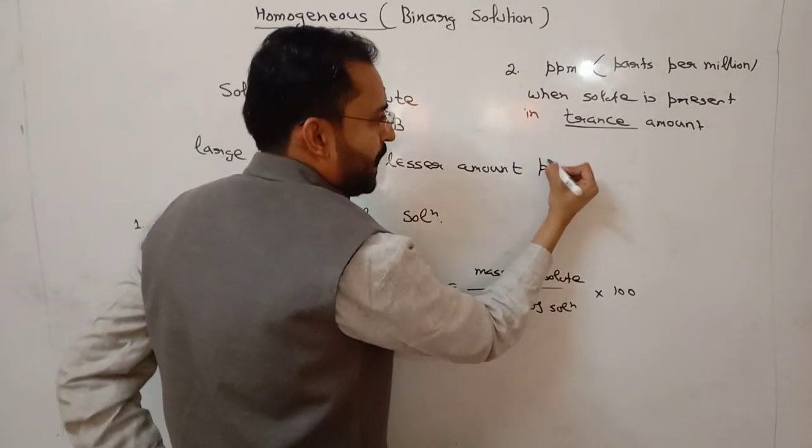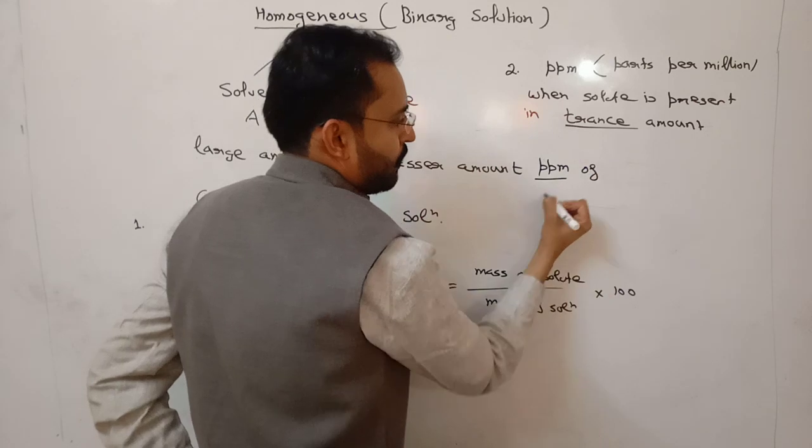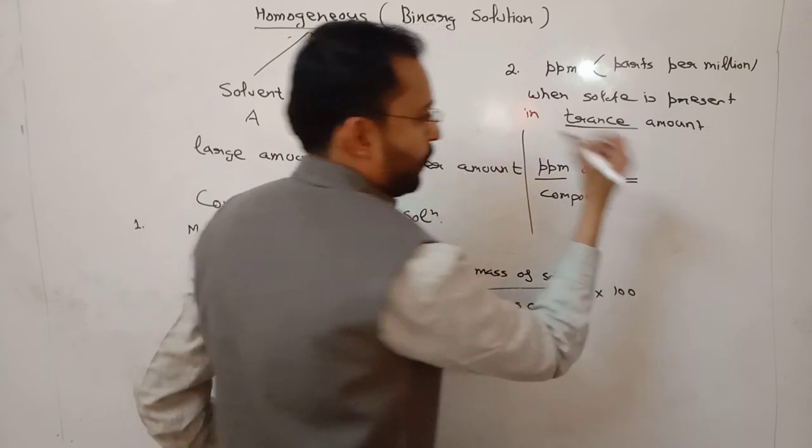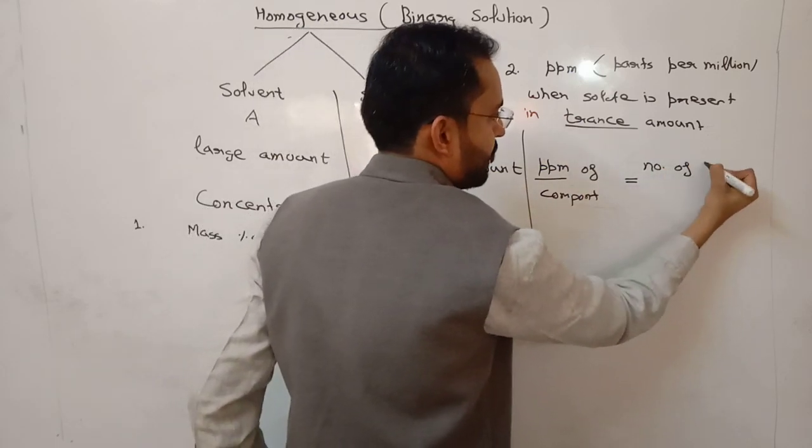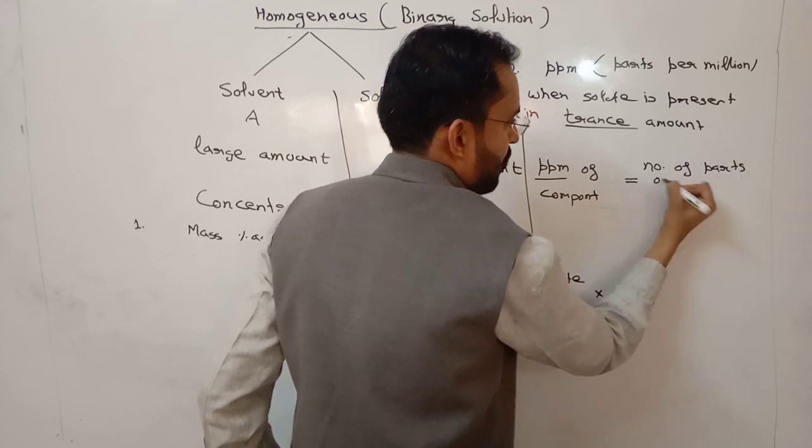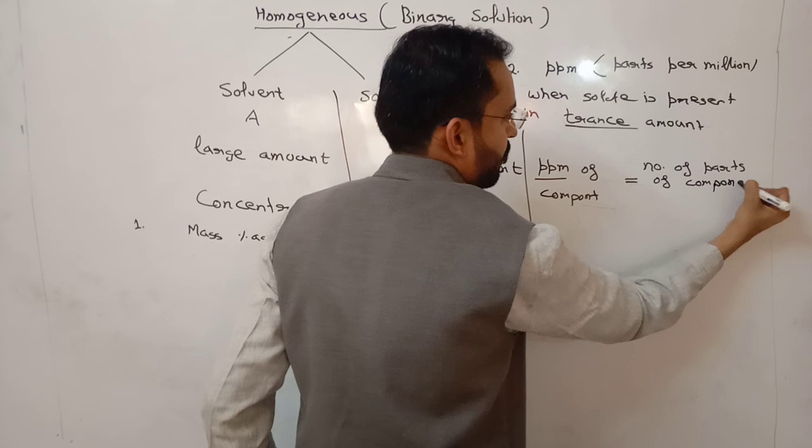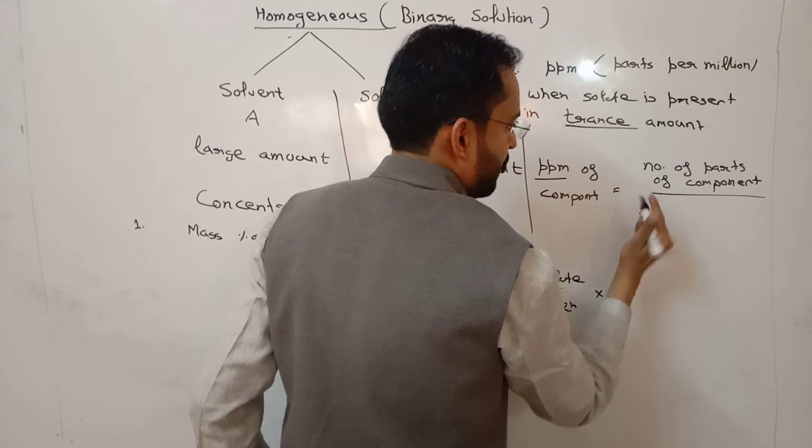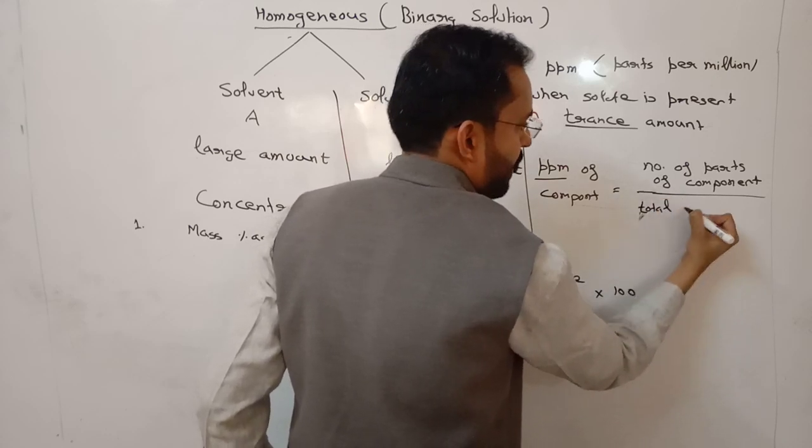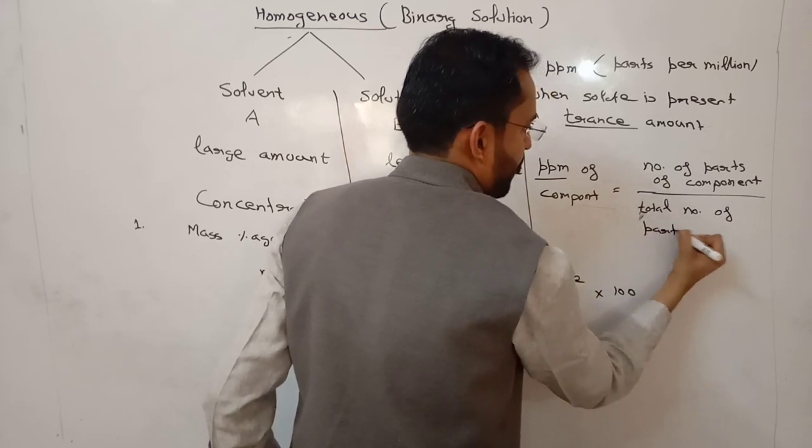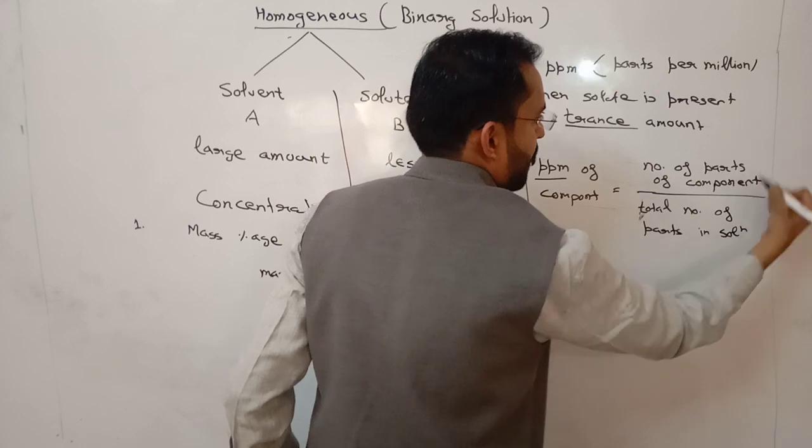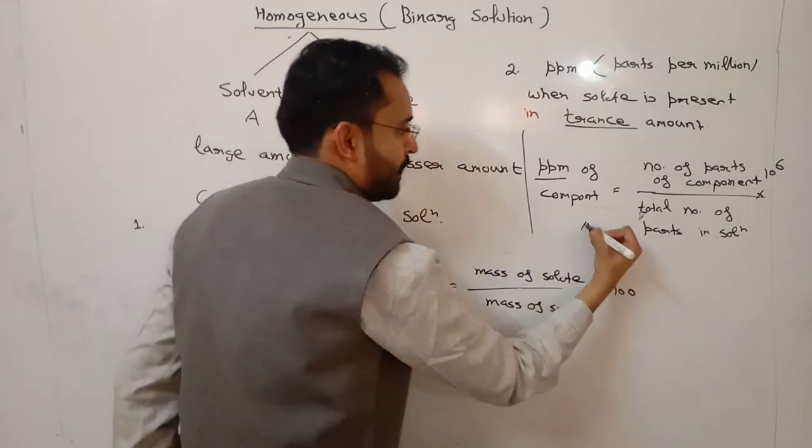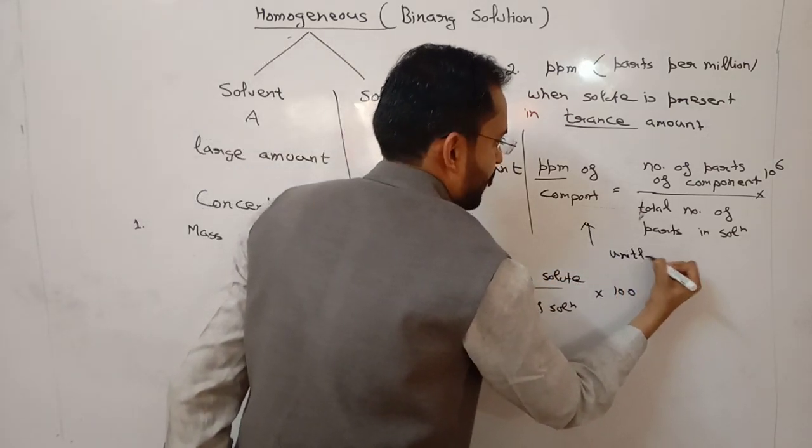So PPM of component is equal to number of parts of component divided by total number of parts in solution multiply with 10 to power 6. Again, this is unitless.